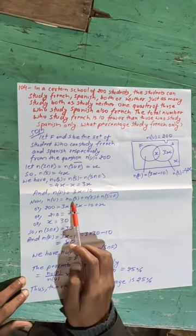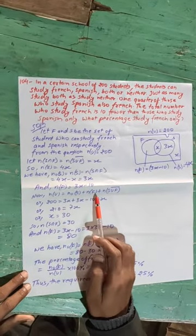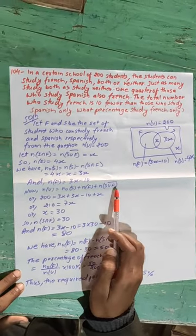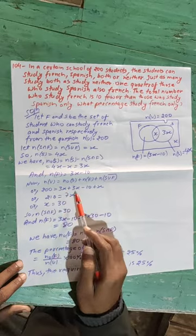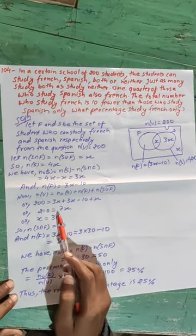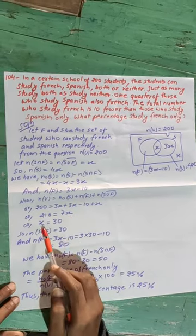Now n(U) = n(S only) + n(F) + n((S ∪ F)'). 200 = 3X + 3X - 10 + X. 210 = 7X. X = 30.